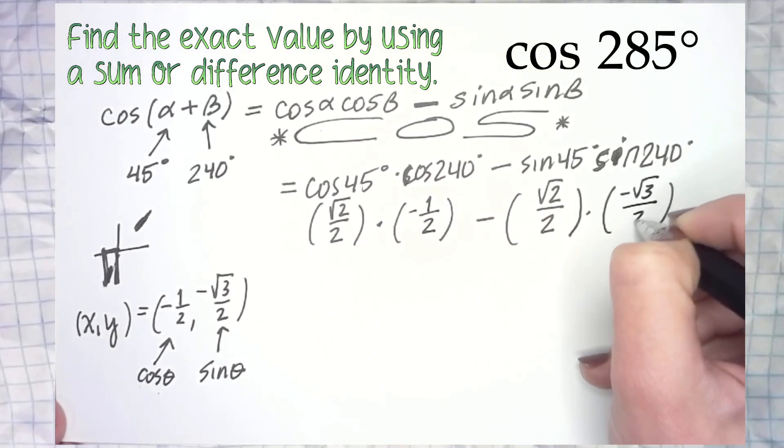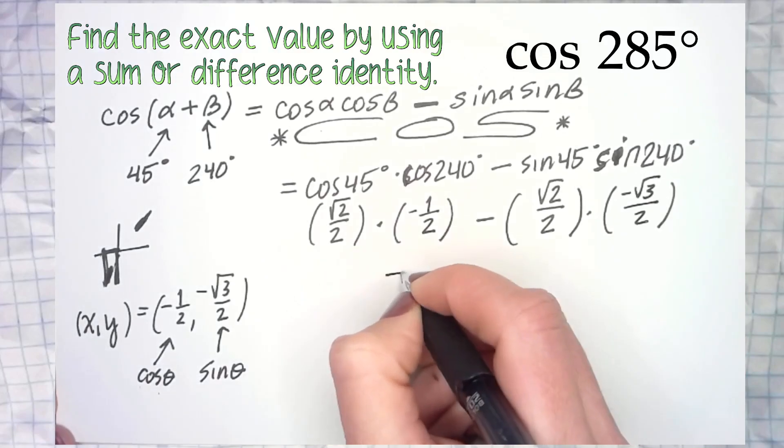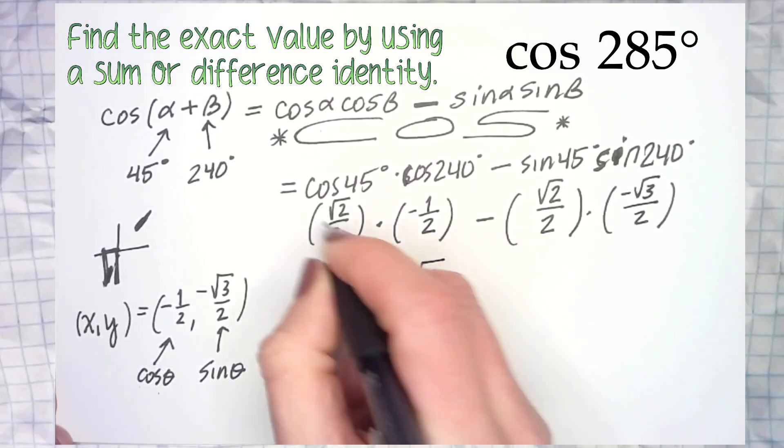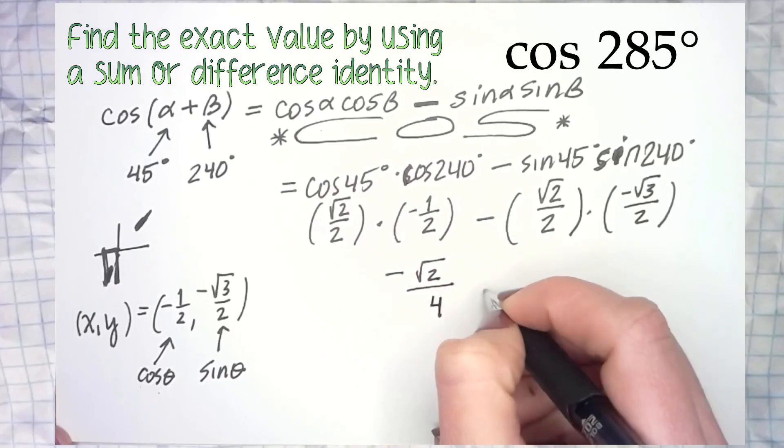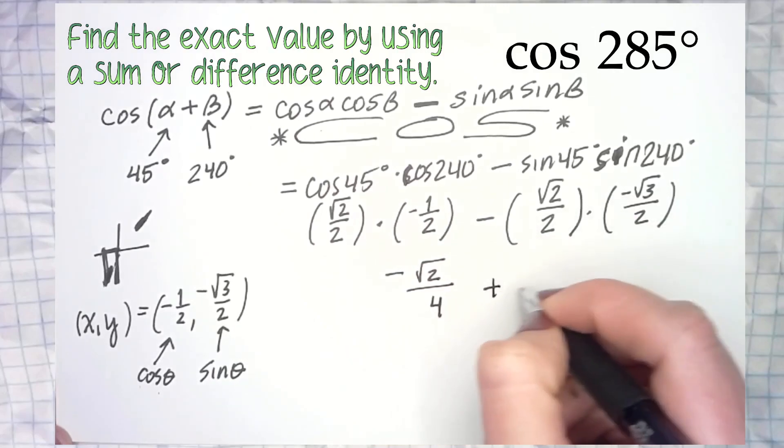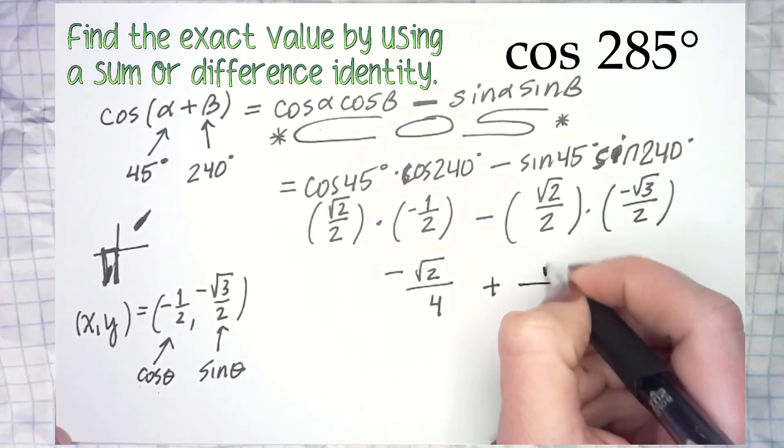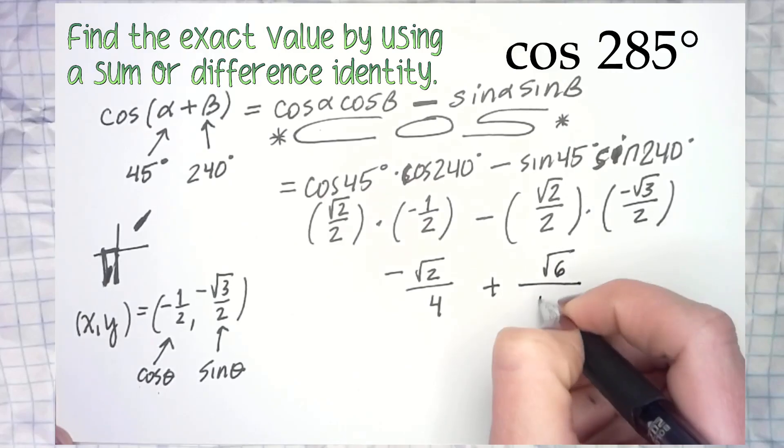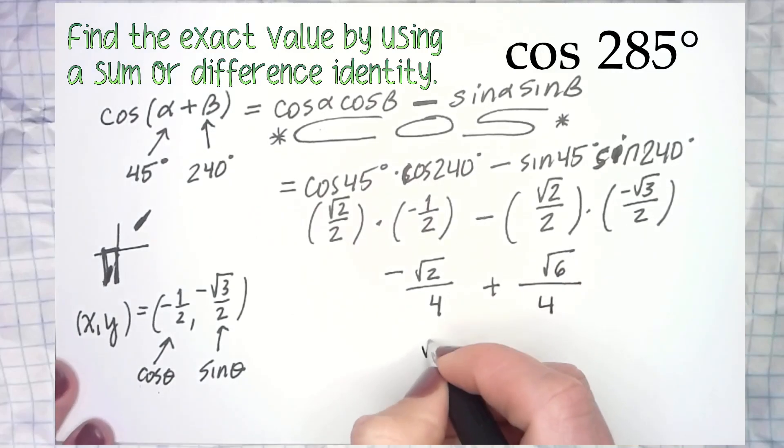What does that give us? Negative root 2 over 4, minus negative, plus root 2 times root 3 is root 6, 2 times 2 is 4. So you can leave it like that, depends what we are looking for.